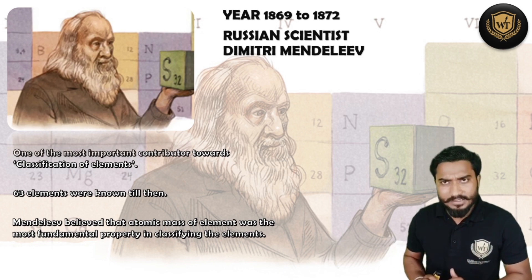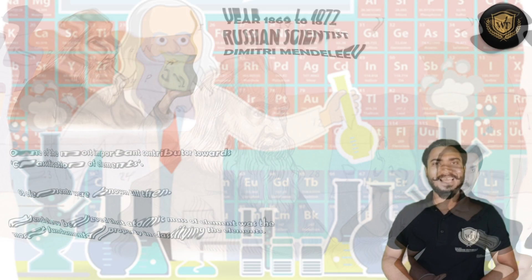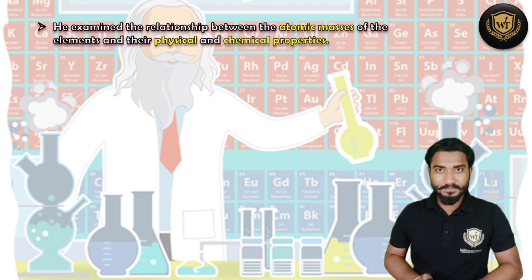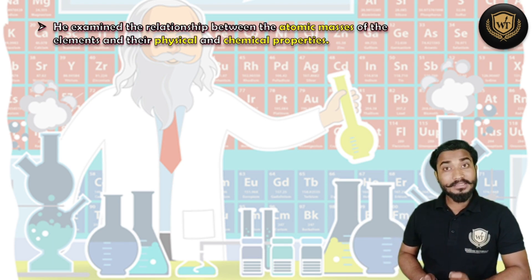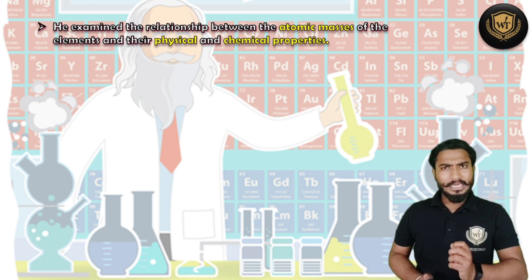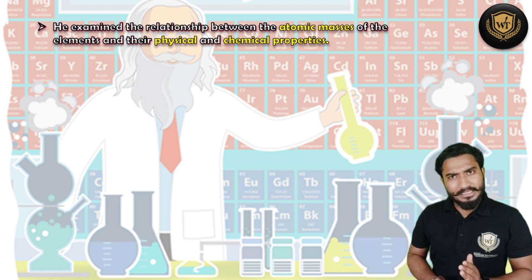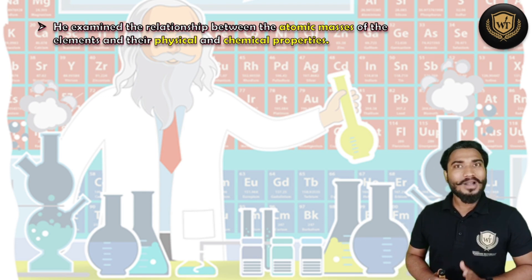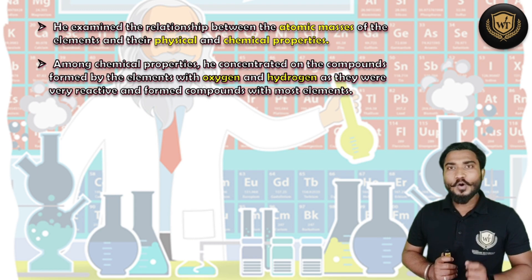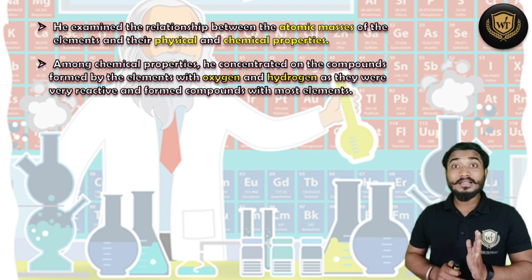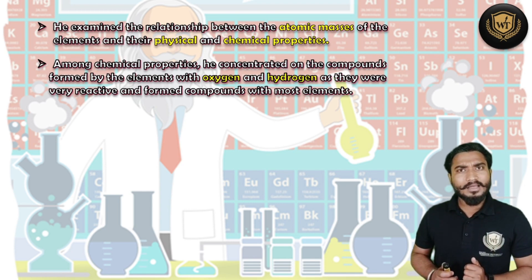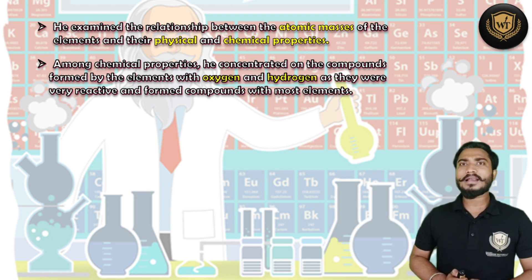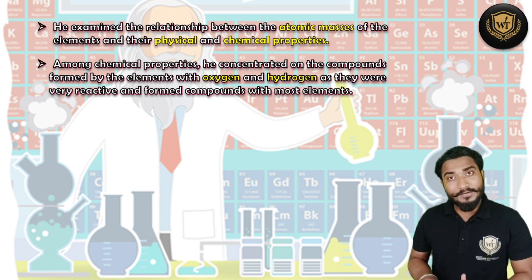Mendeleev believed that atomic mass is the fundamental character of an element. Considering atomic mass as the fundamental character, he started his journey. Based on this knowledge, he examined the relationship between the mass of an element and the properties of the element, and he found that mass is somewhere related to both the chemical and physical properties.